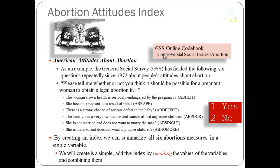You could read through these questions and see they cover different kinds of circumstances. In a way we could think of these as sub-indices, because the first three questions tend to be what researchers call 'hard' questions and the last three are 'soft' questions. Soft questions imply the woman became pregnant and has choices to make, whereas the first three involve circumstances like pregnancy being thrust upon her or confronting a potential birth defect. Some people might create three indices: a hard index, a soft index, and a total index based on all six.